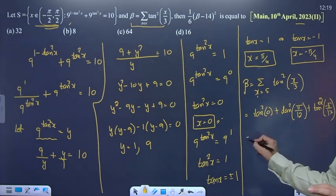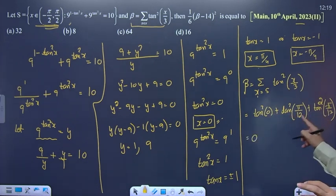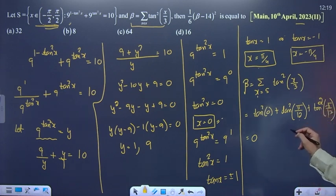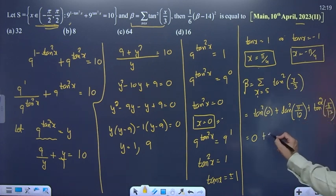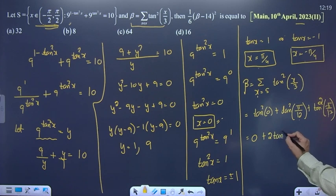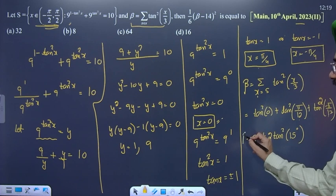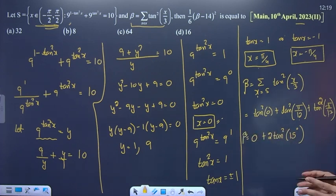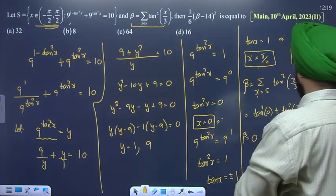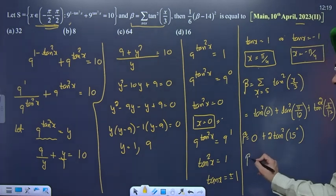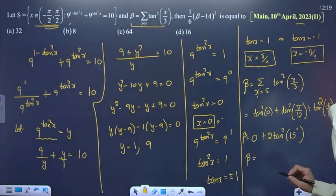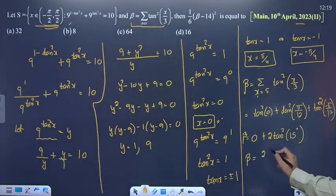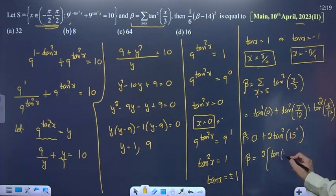tan²(x=0) = 0. For pi by 4 divided by 3, we get pi by 12, and similarly minus pi by 12. Squaring is positive for both. So the beta expression involves 2·tan²(15°), since pi by 12 = 15 degrees.